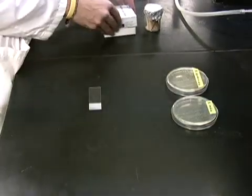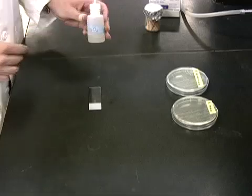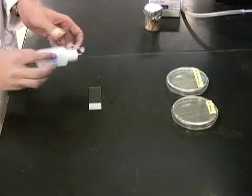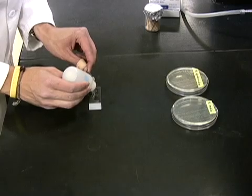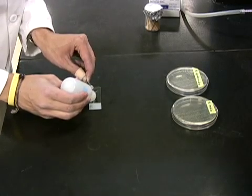To perform the catalase test, place a clean glass slide on the lab bench. Take a bottle of hydrogen peroxide and place two small separate drops on the slide.